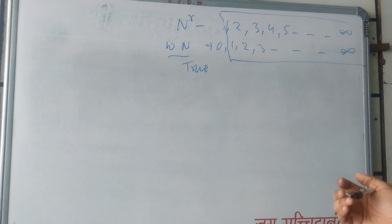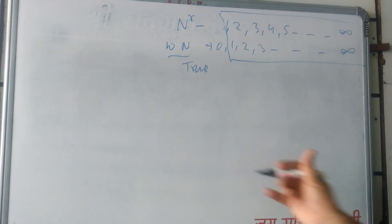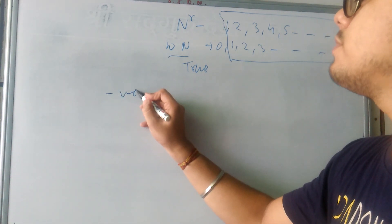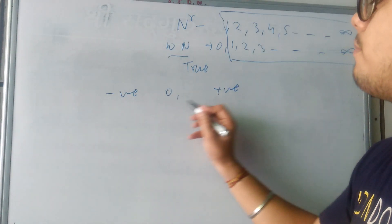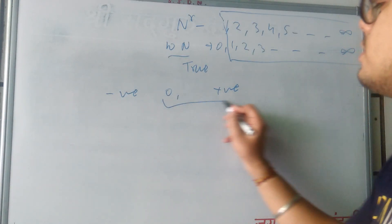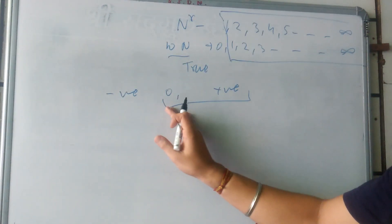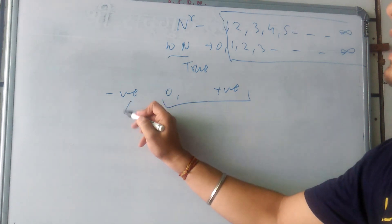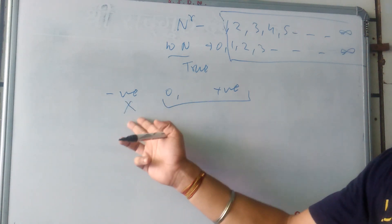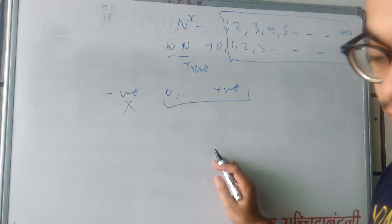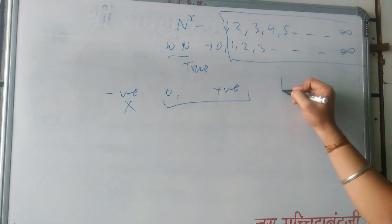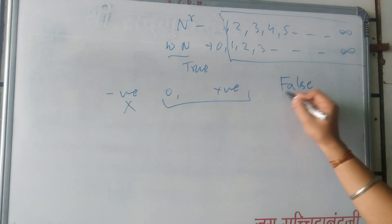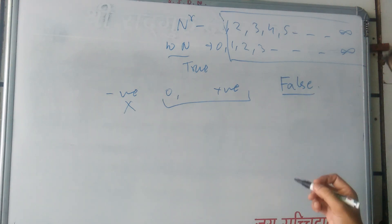The next statement: is every integer a whole number? For integers we have negative numbers, 0, and positive numbers. But in whole numbers we only have 0 and positive numbers — negative numbers are not included. So this means this is false. Every integer is not a whole number.